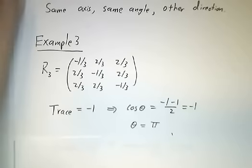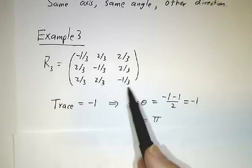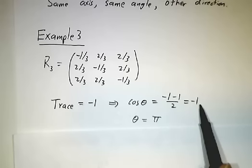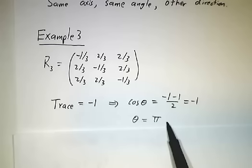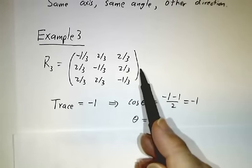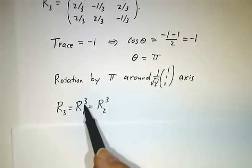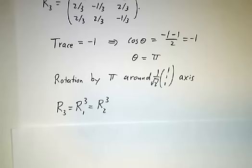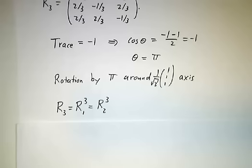Our last example again uses the same columns in a different order, but now the trace is −1. If the trace is −1, then cosθ = (−1 − 1)/2 = −1, which means θ = π, so this is a rotation by 180 degrees about the same (1, 1, 1) axis. And how is a 180-degree rotation related to a 60-degree one? If you do a 60-degree rotation three times, that's 180 degrees. So just by looking at traces and finding a single eigenvector, we can find out an awful lot about a matrix.